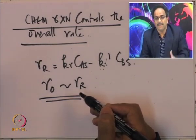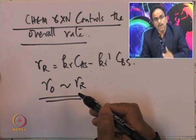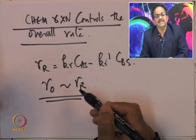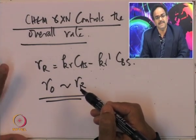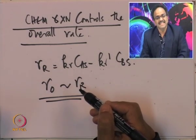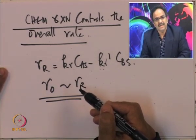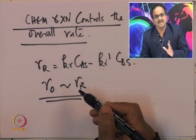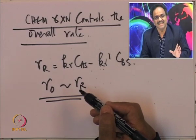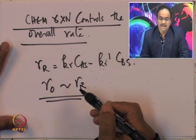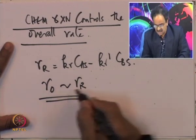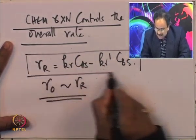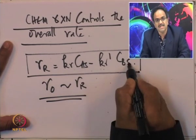This is like a relay race: if three people run in sequence and one takes 50 minutes while the others take 5 and 2 minutes, the total time is close to 50 minutes — that person's rate governs the overall process. So the rate of the overall process equals the rate of chemical reaction. But I cannot stop here because C_AS and C_BS are not bulk concentrations — I need to express them in terms of bulk concentrations.